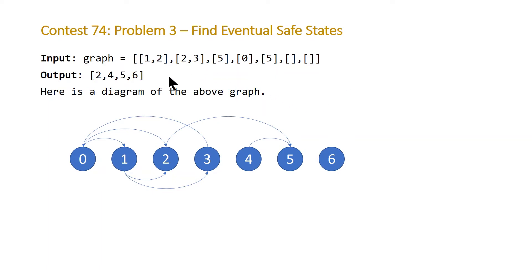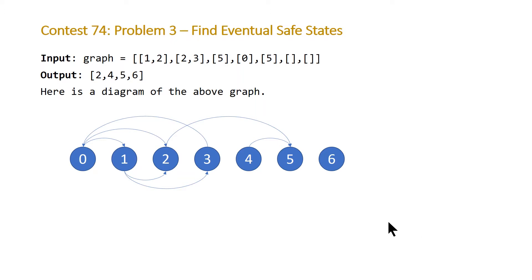The answer for this example is that nodes 2, 4, 5, and 6 are eventually safe. Here's a visual representation of our graph — from node 0 we can get to nodes 1 and 2. For those who don't know much about graph theory, this is called a directed graph, and specifically it's a directed cyclic graph, meaning you can have cycles in your graph.